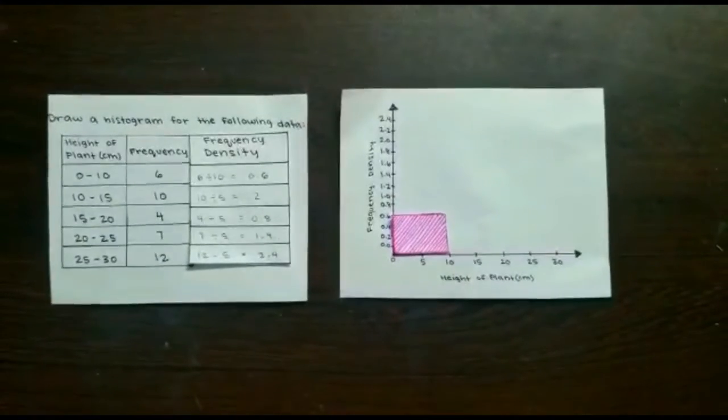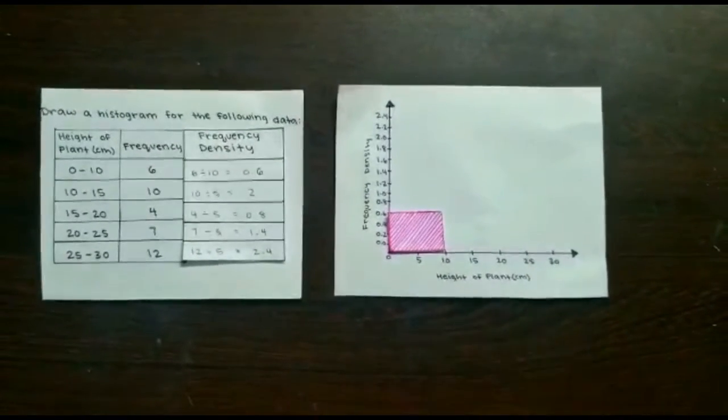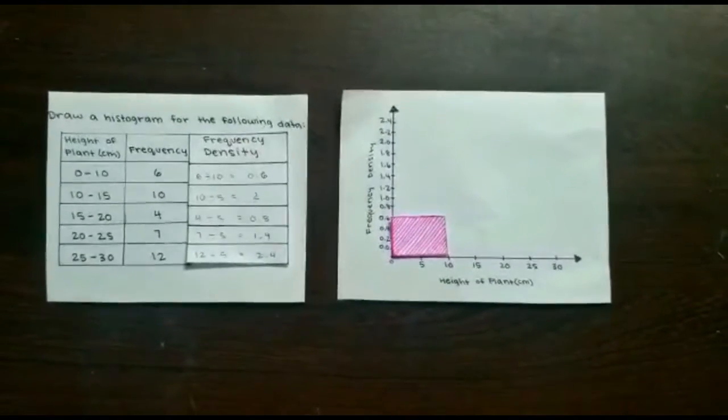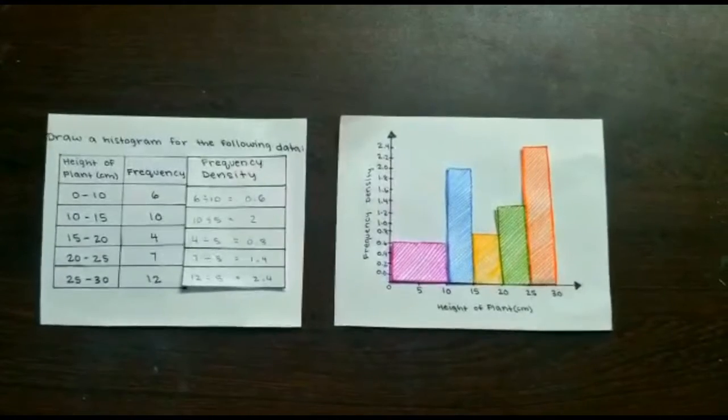For the first one, since the group width is 10, that would be the width of the bar. And the length, which is the frequency density, would be 0.6. We could draw the rest of the bars this way.